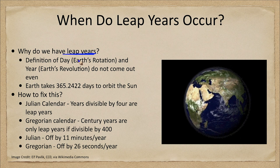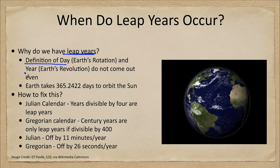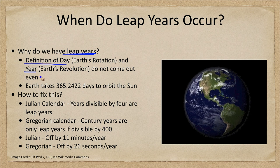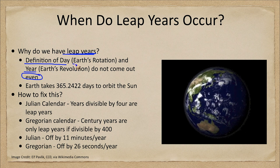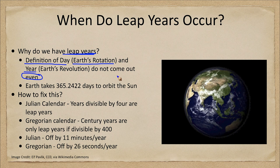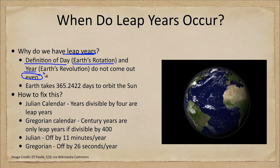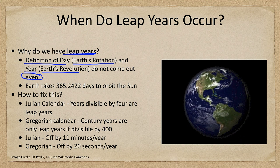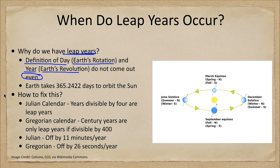The reason we need leap years is because the definition of the day and the definition of the year don't come out even — there are not an even number of days in the year. Our day is based on Earth's rotation, taking the Earth about 24 hours to rotate once, and the Earth's revolution is the time it takes to go around the sun, which is about one year to make a complete trip around the sun.